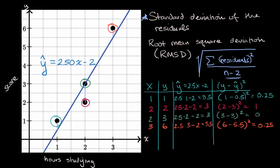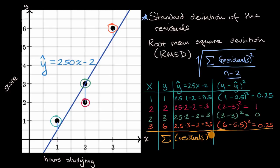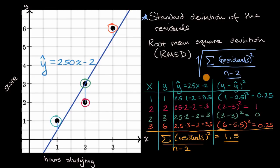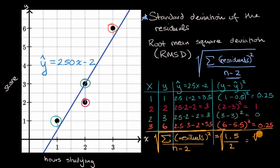Now let's take the sum of all the squared residuals. The sum equals 1.5. Then dividing by n minus two — I have four data points so I divide by four minus two, which is two — gives 1.5 over two, which is three fourths. Taking the square root gives us the square root of three fourths, or the square root of three over two.